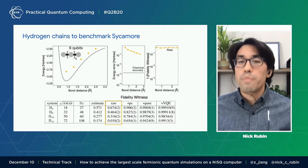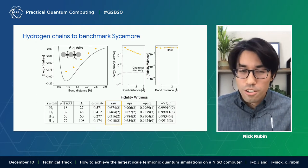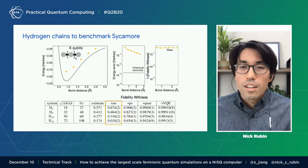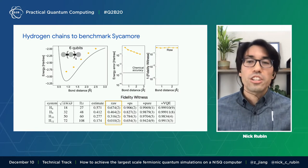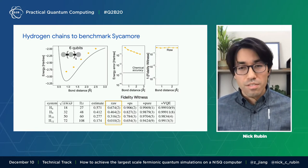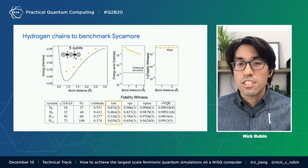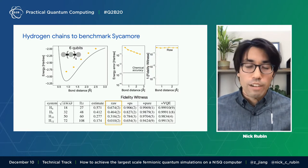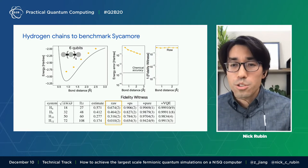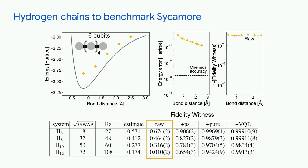Our largest system involves 72 square-root ISWAP gates and 108 RZ gates, which is about an order of magnitude larger than previous chemistry experiments. So if we simulate the electrons at six points along the binding curve of these hydrogen chains and just look at what we get right out of the box, we get those orange points.